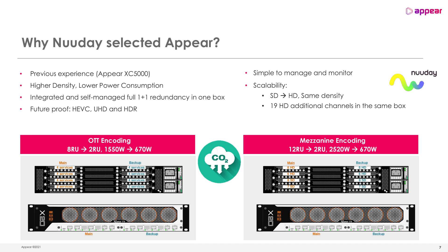Additionally, APIR offers an integrated and self-managed full 1+1 solution all in just one box, while keeping a future-proof solution supporting HEVC, Ultra HD, and HDR, offering a simple-to-manage and monitor solution where all encoders are managed in the same box, and still being a scalable solution — able to go from SD to HD with the same density, or even adding more channels in high definition or ultra-high definition.